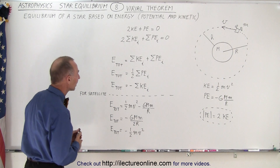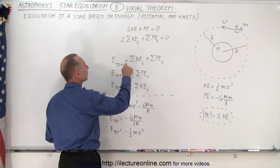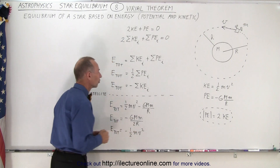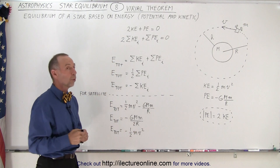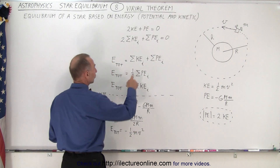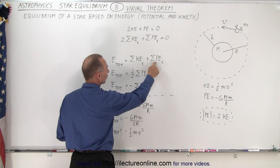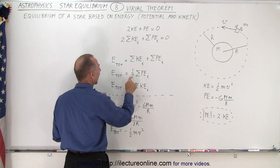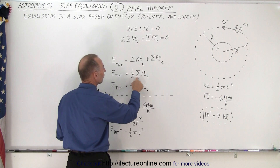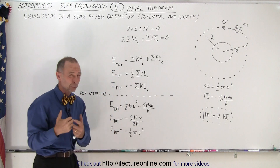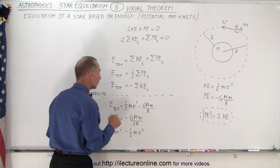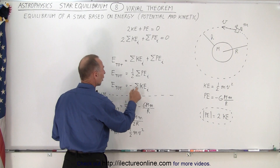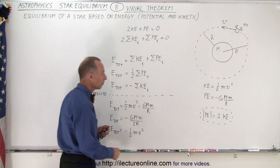We can then say that the total energy will be the sum of all the kinetic energies plus the sum of all the potential energies. Realizing that the kinetic energies have half the magnitude of the potential energy, the total energy will be half the sum of all the potential energies, which is of course negative. Therefore, the total energy can also be expressed as the negative of the sum of all the kinetic energies.